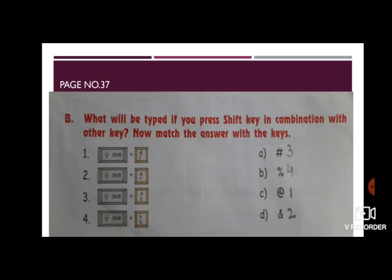The first one is shift key plus two number key, so when we press two keys together the output is at the rate. Then second shift plus seven, that is and. Then shift plus three, that is hash. Shift plus five, that is percentage. So the symbols will come if you press the number keys along with shift key.